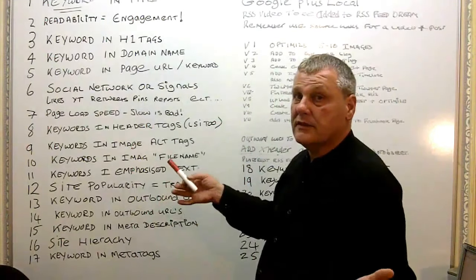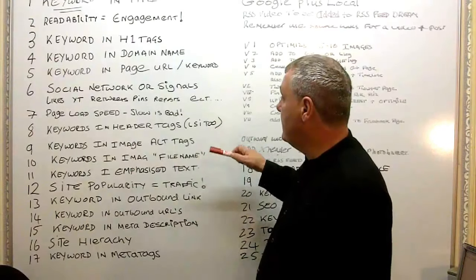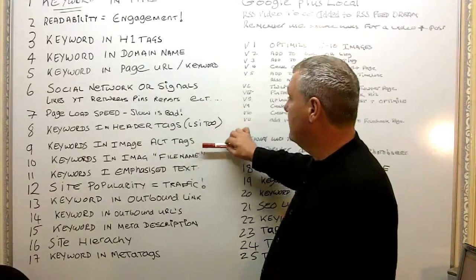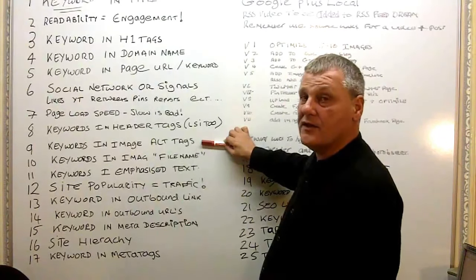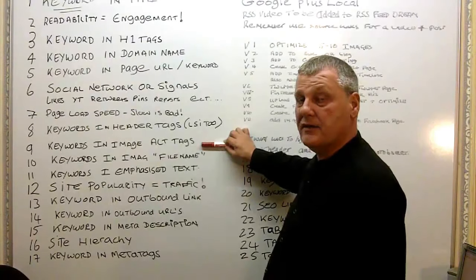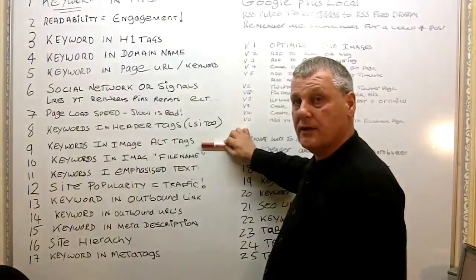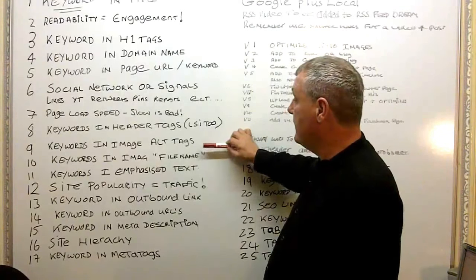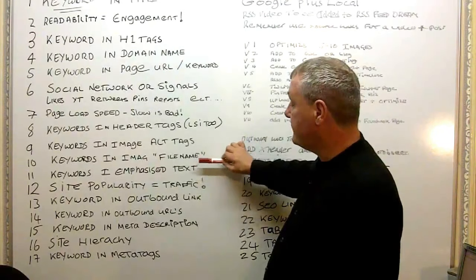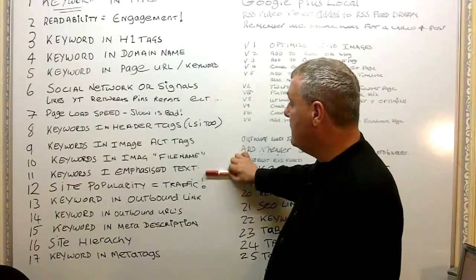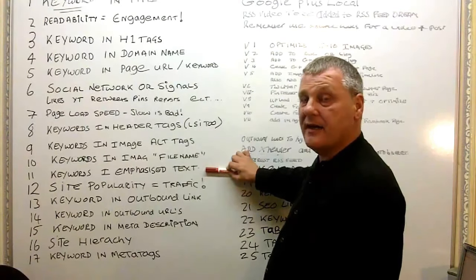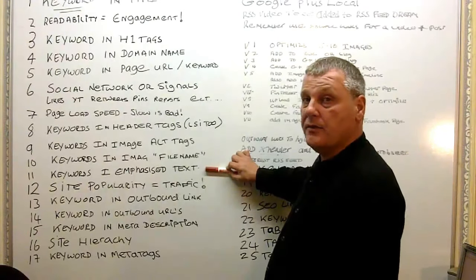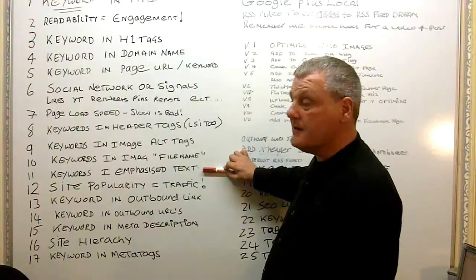Page load speed — obviously slow is bad, because the slower it loads the longer it takes and some people will just turn it off, and Google doesn't like slow page speed. Keywords in header tags and LSI keywords as well if you can get them there. Keywords in image alt tags — not just the alt tags but the file name too. Before you upload an image, make sure you name it with the keyword on your hard drive — it makes a big difference. Keywords in emphasized text — underlining, bold, italics, inverted commas — your main keyword should appear there three or four times.